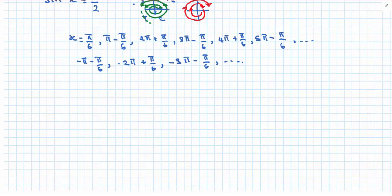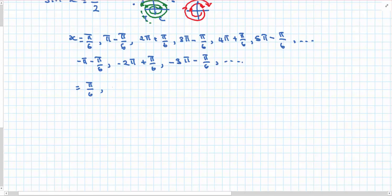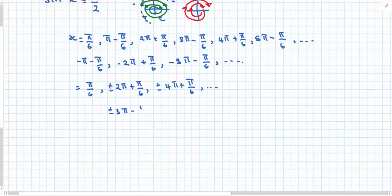So I could write the solution as π/6 plus or minus 2π plus π/6, plus or minus 4π plus π/6 and so on. And then plus or minus 3π minus π/6, plus or minus 5π minus π/6 and so on. So the solution is split into two different patterns.